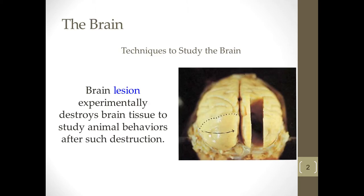The first most basic way that we can study the brain is through what's known as a lesion study, where we experimentally destroy portions of the brain to study the behaviors after the destruction. We can't ethically do this in humans, so oftentimes with lesion studies we'll selectively damage portions of a rat brain and then examine how their behaviors change after the damage.